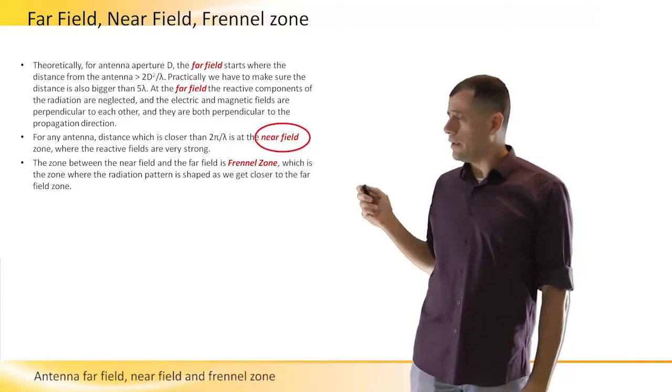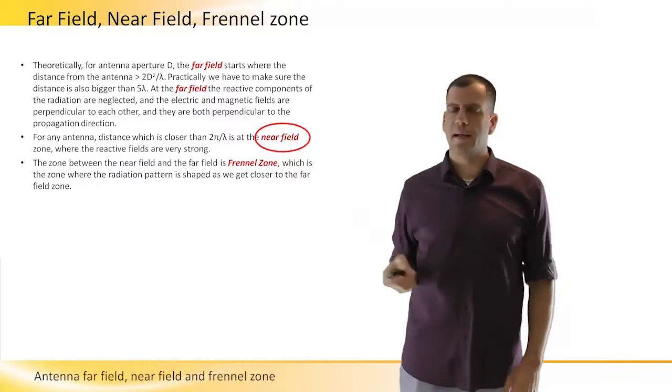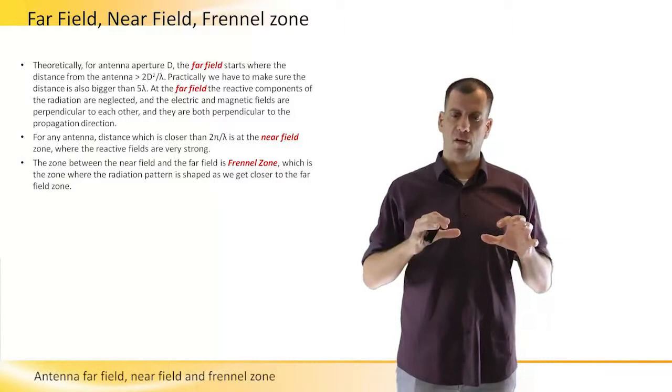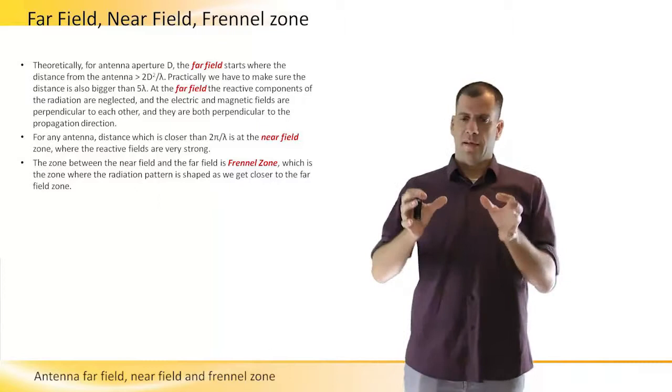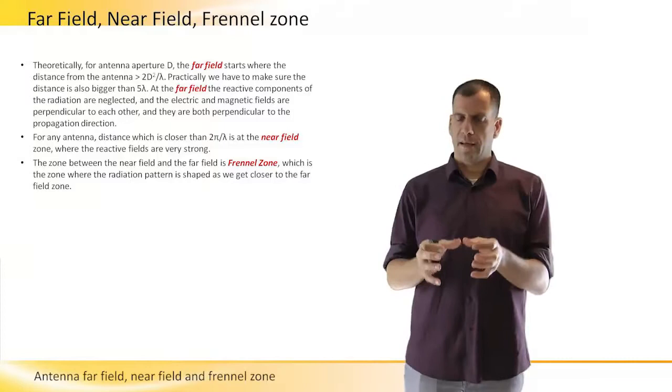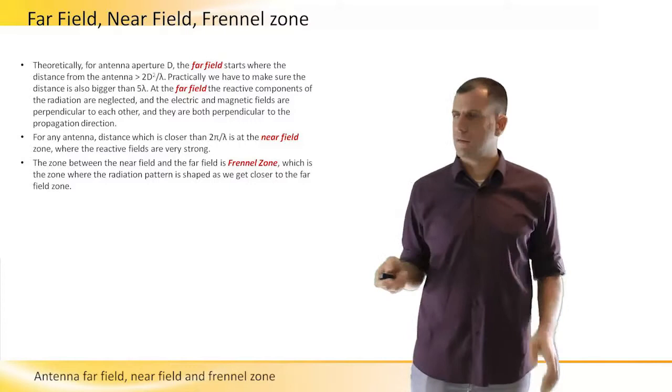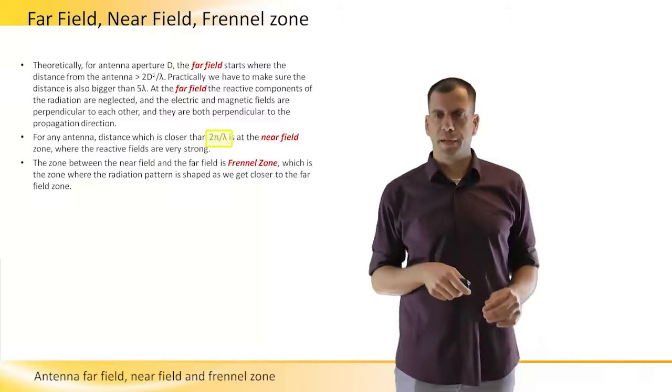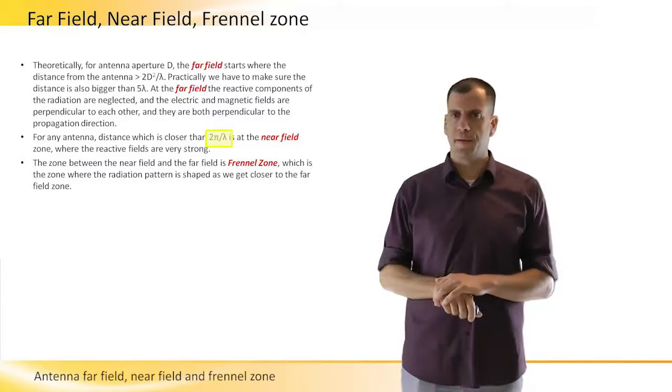The next term is the near field. The near field is actually the zone where the electric field and the magnetic field don't really radiate. It's like the generation zone of the radiation. The fields in this zone are very strong and this is very close to the antenna. We can look at the traditional definition of it as 2π per wavelength. You can understand this is very, very close to the antenna.